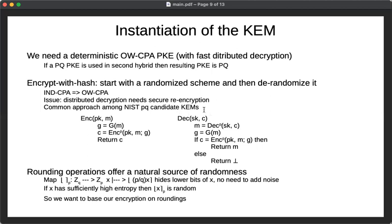We have a problem if we try to do this in a distributed way. The message in our case is going to be the session key, which is still secret at this point. So we would need to re-evaluate the hash function over secret data and use it as a seed for the randomness of the encryption, which has to be computed over the secret session key. Especially when the encryption algorithm uses some unusual probability distribution, this operation is really expensive for general multi-party computation techniques.